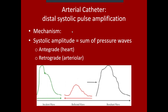This is because of distal systolic pulse amplification. The systolic amplitude of the pulse is not just one pressure wave coming out of the heart — it's actually the sum of a couple of different pressure waves. There are two types: the incident wave, which is the pulse wave produced by ventricular contraction ejecting blood into the arterial system.